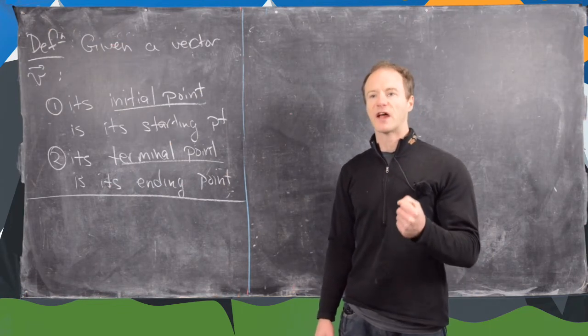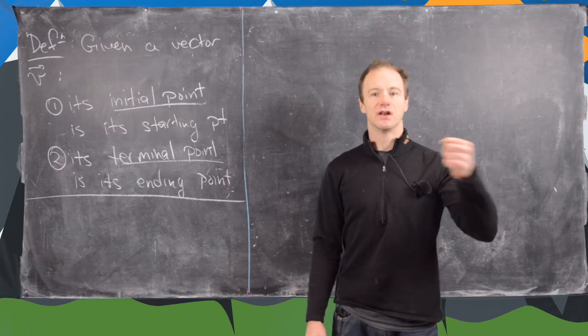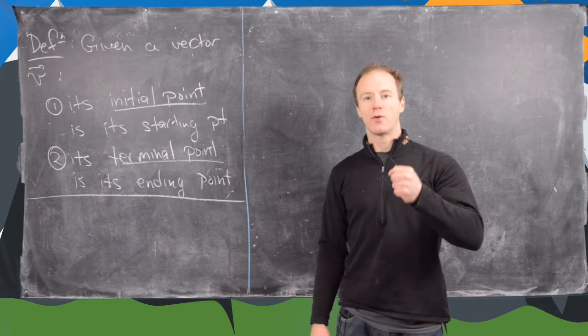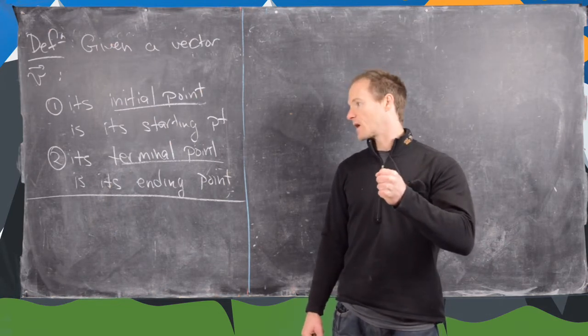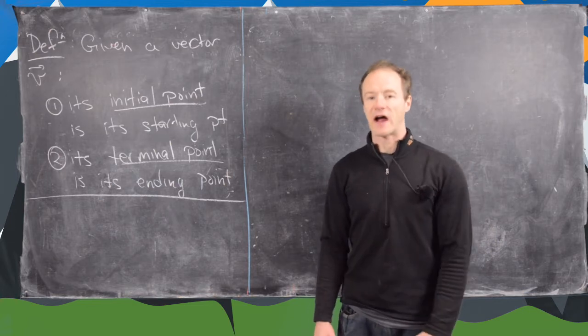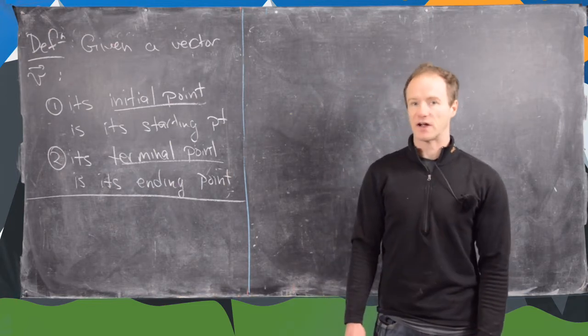So if we think about the vector as an action, like an action of movement, then the initial point is the starting point of the object before the vector has acted, and the terminal point is the final point of the object after the vector has acted.